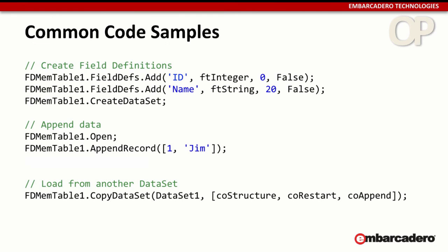Here are some code examples showing common functionality with the FDMemTable — Object Pascal first, then the C++ equivalent, which mainly differs in syntax. Since the FDMemTable is not connected to a database, you have to define what the columns and fields are. You add a field def: in this case, we're adding an ID field of type integer with size zero (since integer has a fixed size) and the last parameter indicates whether it's required. Then we add a Name field of type string with a width of 20 characters. Then we call CreateDataSet, and the dataset is ready to use.